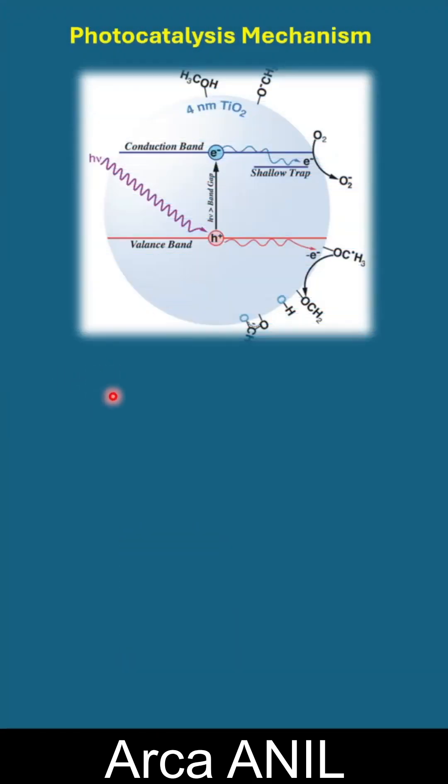So what happens in photocatalysis? For instance, we have a nanoparticle of titanium oxide with a valence band and conduction band.